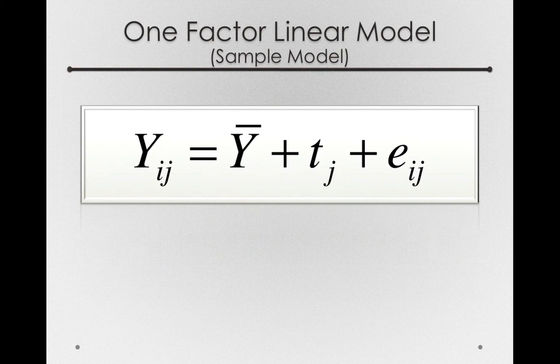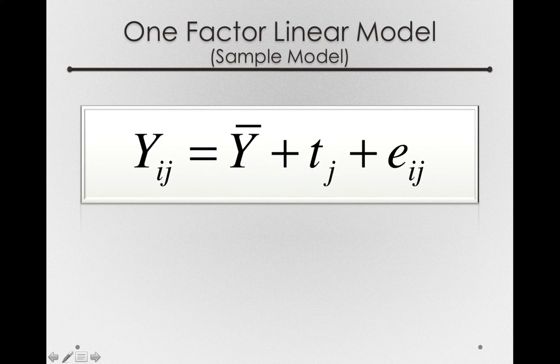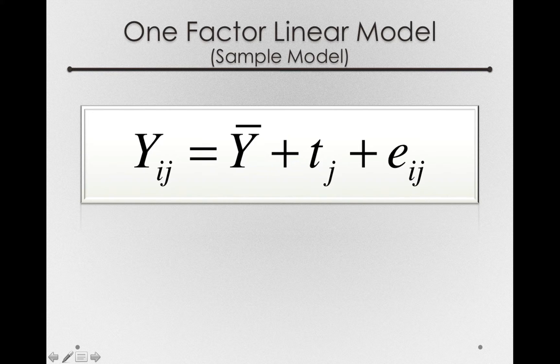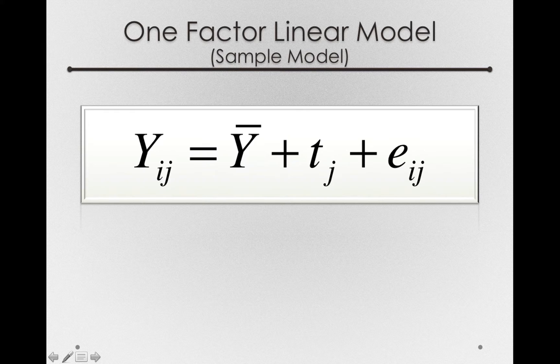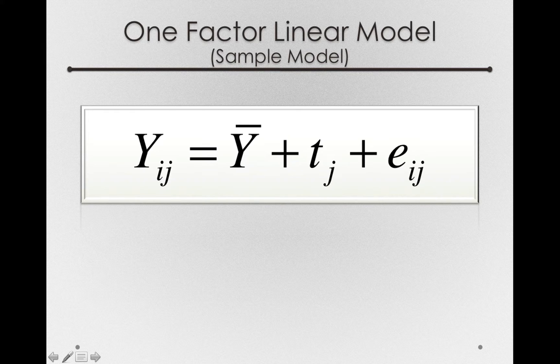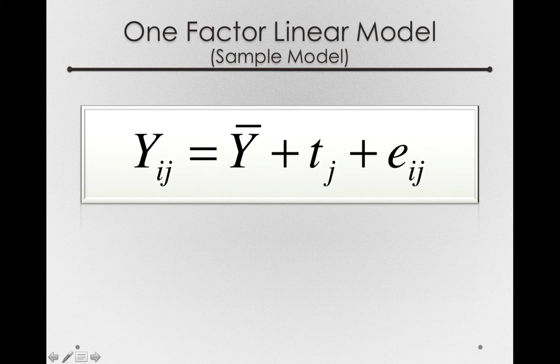Our one-factor linear model in a sample will actually have the exact same components. But notice we don't have Greek symbols; instead we're using Roman characters to represent the fact that these are not true parameters of a population model. Instead, these will be our estimates of that population model.